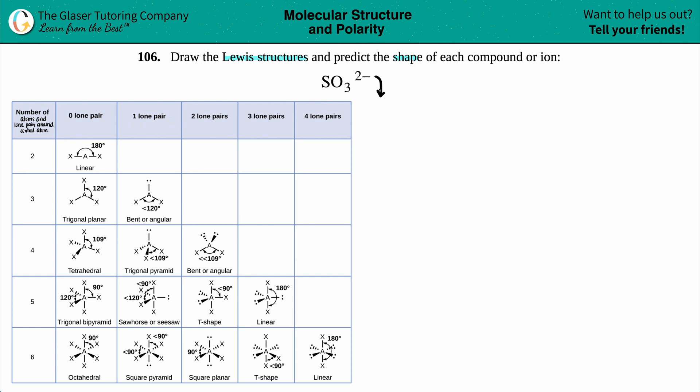So the negative two always means that you're more negative than positive, and in order to get more negative you always gain electrons because electrons are negative. Okay, so we got to draw the Lewis structure of SO3 2-minus and predict the shape.